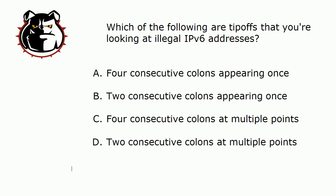Four consecutive colons — that can't happen, period. It can't happen once and it can't happen at multiple points. When we're working with zero compression, it's a very powerful tool, and when we use zero compression we're actually going to see two colons at one point in the address. You really have to be careful with that on the exam or in a lab or production network — it's easy to gloss over two colons when you're used to seeing one. But you can only use it one time, so four consecutive colons, whether they appear once or at multiple points, that's illegal. That kind of narrows it down to B and D.